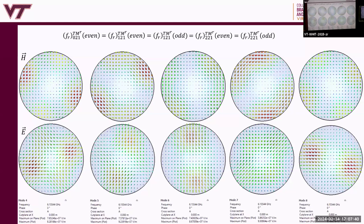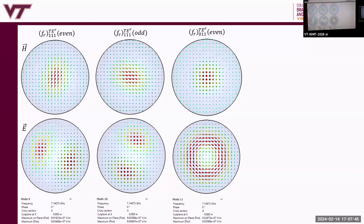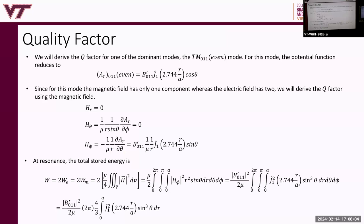Finally, let's derive the quality factor Q for the TM_{011} dominant mode. For this mode, the potential function reduces to a simple expression, and the magnetic field has only one component: H_phi, since M=0 means phi-differentiation vanishes. Since this mode has fewer field components than the electric field expressions, we derive Q from the magnetic field. At resonance, the total stored energy W_total equals twice the stored magnetic energy, which is 2 times (mu/4) times the volume integral of |H_phi|^2.